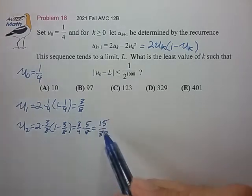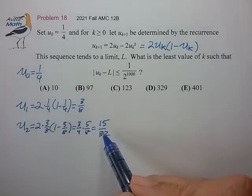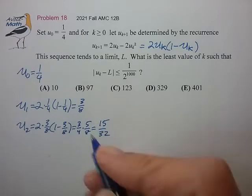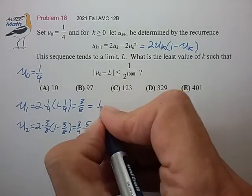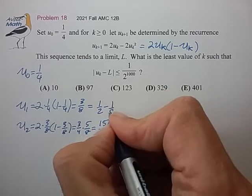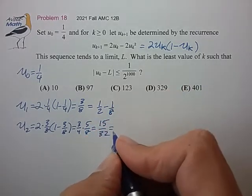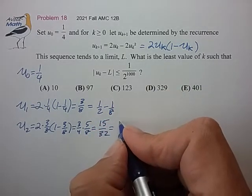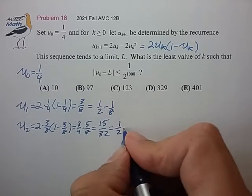So what I notice is that these two values are just shy of a half. So perhaps I want to write this as 1 half minus an eighth, and I want to write this as 1 half minus a 32nd.